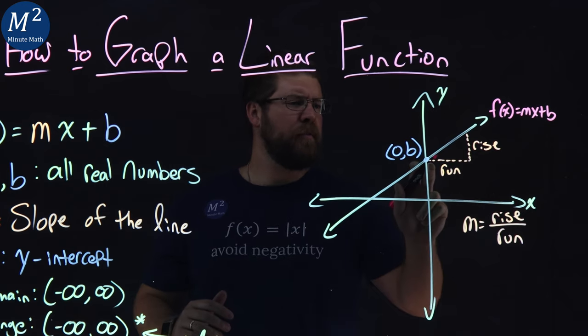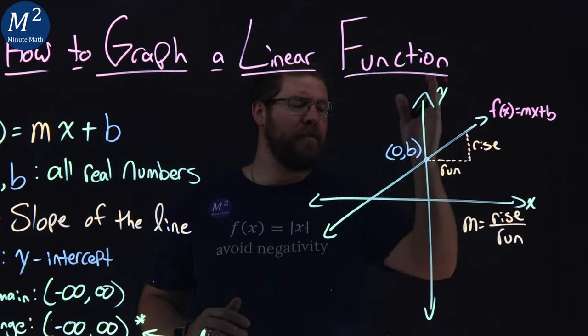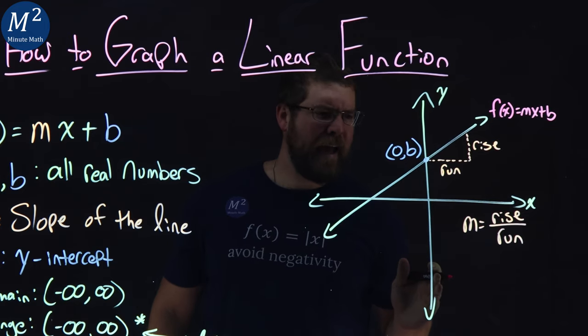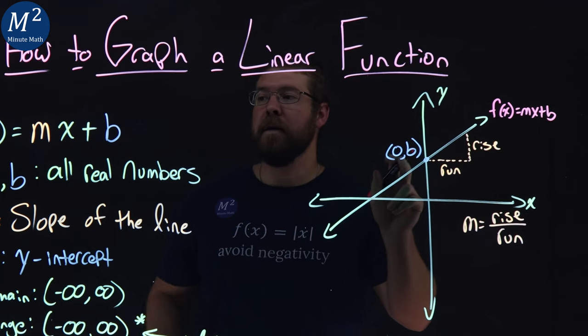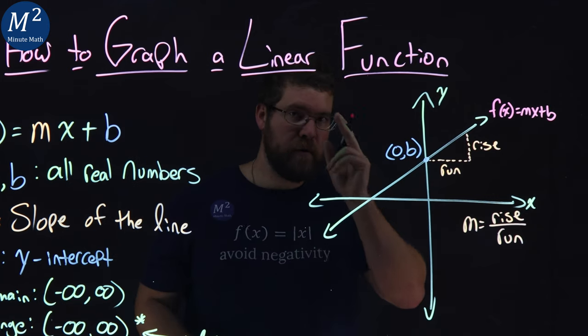Our y-intercept is where the line crosses, as you can guess, the y-axis. And that happens at the point value zero, comma, b, the y-intercept. Good to know.